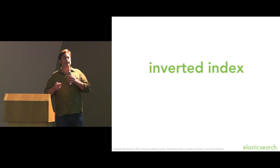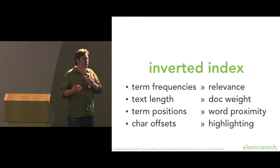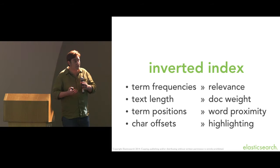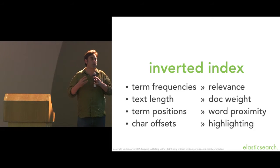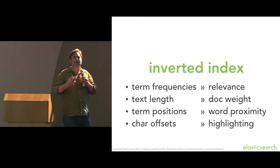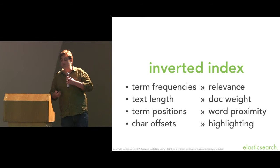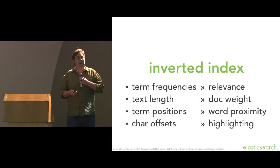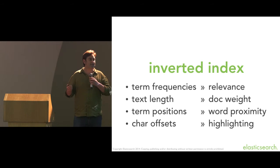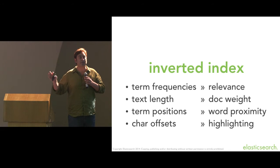This structure is called an inverted index. Besides telling you what documents a term appears in, it stores a whole bunch of other metadata. It gives you frequencies — the word 'the' appears very frequently, while 'supercalifragilisticexpialidocious' appears very uncommonly, so that's a much more important word. That helps us with relevance calculations. The length of the text field matters too — words in a title field are more relevant than words only in the body. With term positions, we can do word proximity queries and phrase matches, and with character offsets we can produce highlighted search snippets.